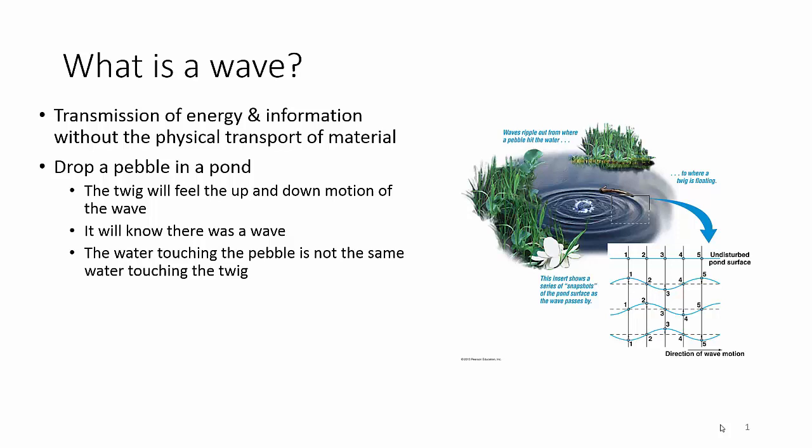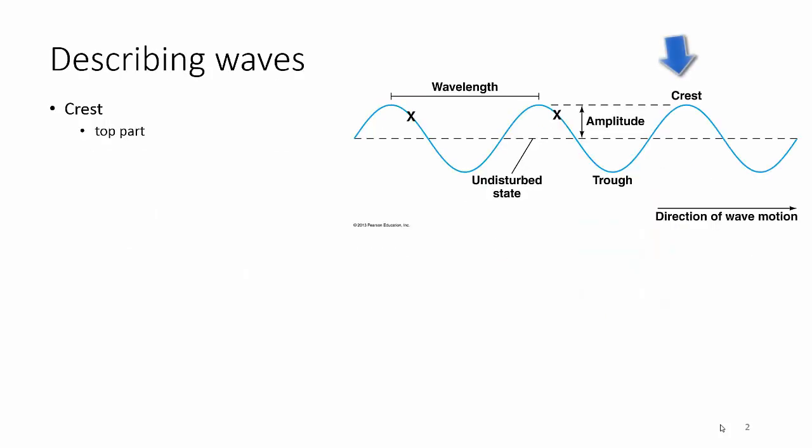There are different parts of waves. Here's a picture of the full wave. The first part is the crest — the crest is the top part. The trough is the bottom part.